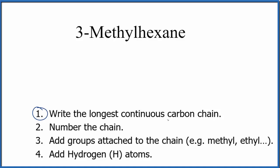We'll write the longest continuous carbon chain - that's going to be the hexane. Hex means six, so we'll put six carbons in a row. Let's bond those together. Since it's an alkane, that'll be a single bond between the atoms.